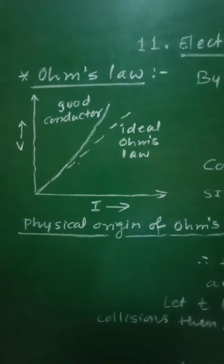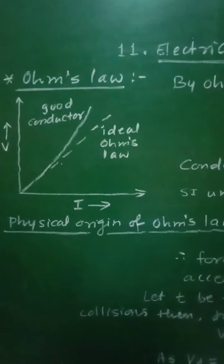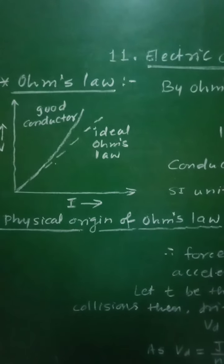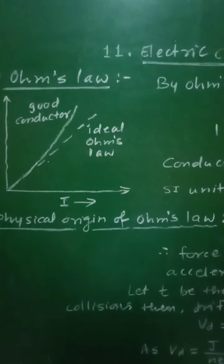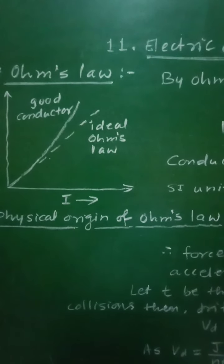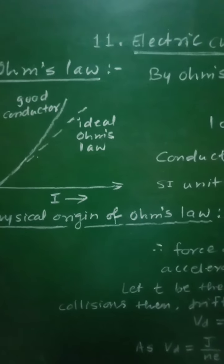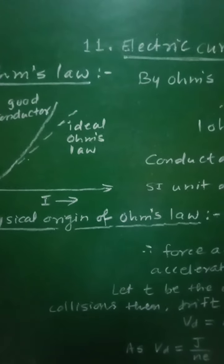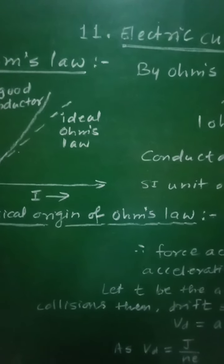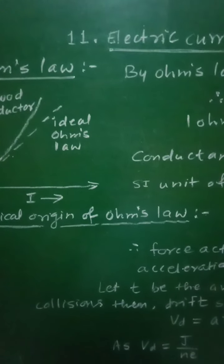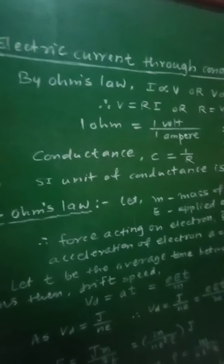The relation between voltage and current is given as: the current I flowing through the conductor is directly proportional to the potential difference V applied between the two ends of the conductor, provided that the physical state of the conductor is unchanged. The physical state of the conductor means the material, temperature, and dimensions of the conductor must remain unchanged.